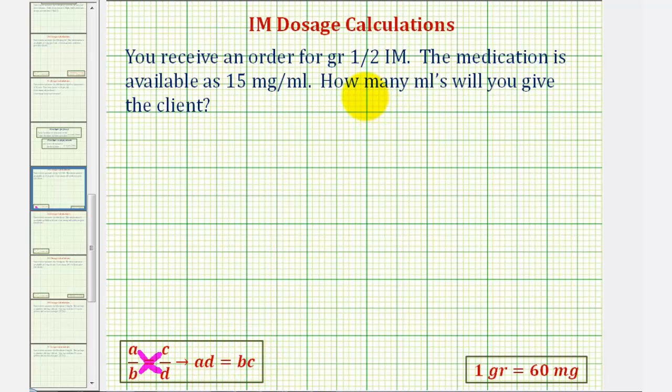Looking at the given information to set up our proportion, we'll use the fact that the medication is available as 15 milligrams per milliliter as our first rate. Now this must equal the amount of medication ordered. So we'll have one-half of a grain, or 0.5 grain, to an unknown number of milliliters which we'll call X milliliters.